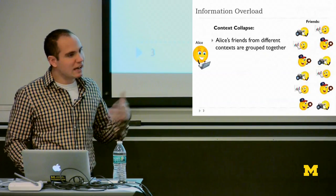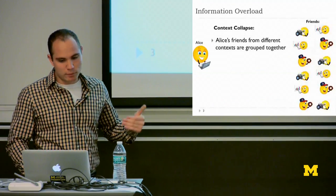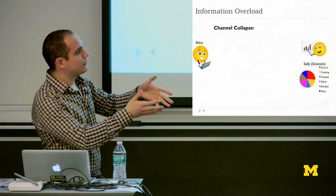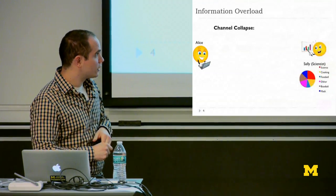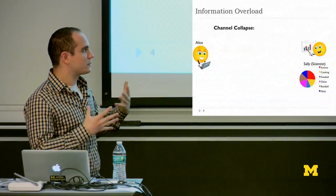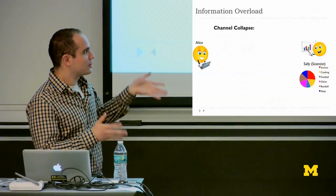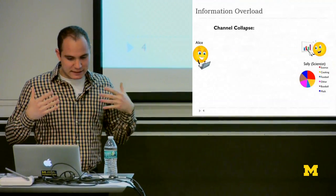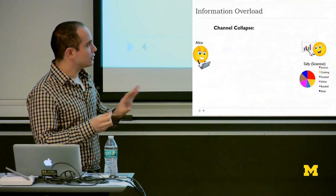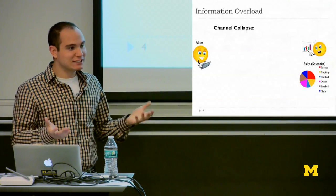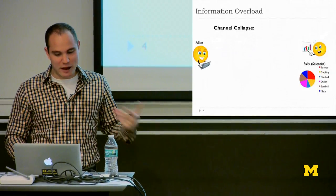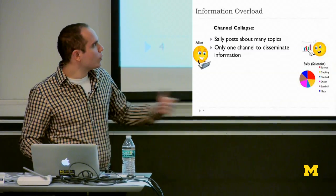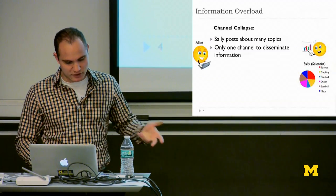The second problem, which we see as the information consumer side, is channel collapse — kind of the converse. For any given friend that Alice follows, let's say Sally, Sally tweets about many different topics: science, math, cooking, football, and more. Since Sally can't channel her information about science specifically to Alice, Alice gets all of Sally's tweets rather than just the ones she's interested in. There's only one channel to disseminate information — this is channel collapse.